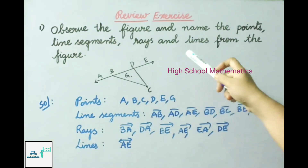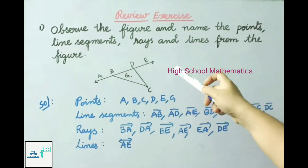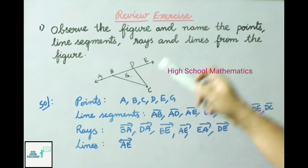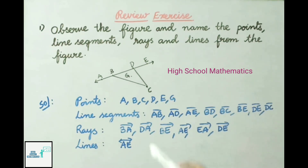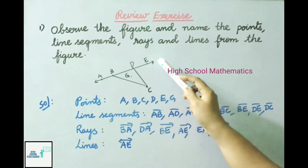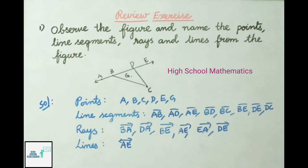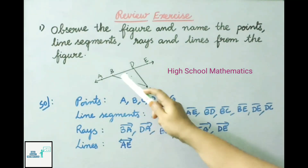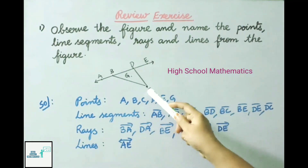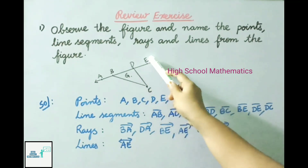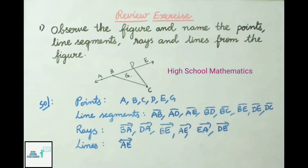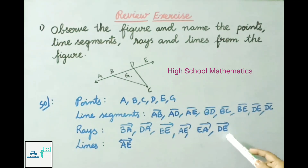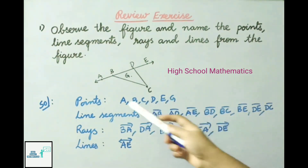Question 1: Observe the figure and name the points, line segments, rays, and lines. Points are A, B, C, D, E, and G. Line segments are AB, AD, AE, BD, BC, BE, DE, and DC. Rays are BA, DA, BE, AE, EA, and DE.